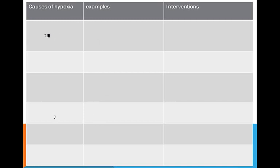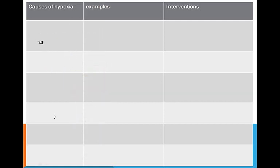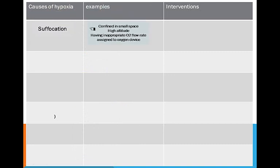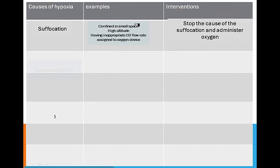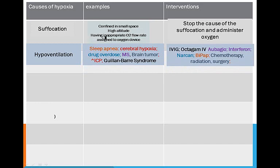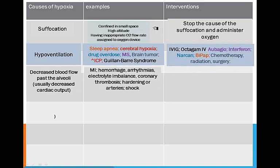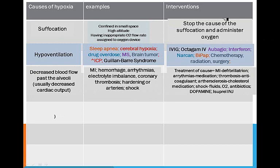Let's talk about causes of hypoxia. The first cause is suffocation — being confined in a small space, being at a high altitude so there's not enough oxygen, or having an inappropriate O2 flow rate assigned to an oxygen device. The intervention is to stop the cause of the suffocation and administer oxygen.